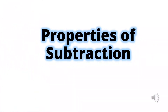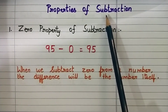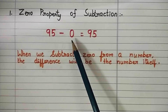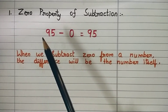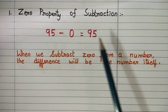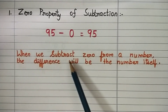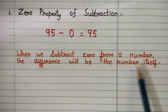Now we are going to learn properties of subtraction. There are three properties of subtraction. Let us start with the first property: zero property of subtraction. In this property, zero is always taken as the subtrahend. Let us take a number: 95 minus zero, we get the difference 95. This tells us that when we subtract 0 from a number, the difference will be the number itself.